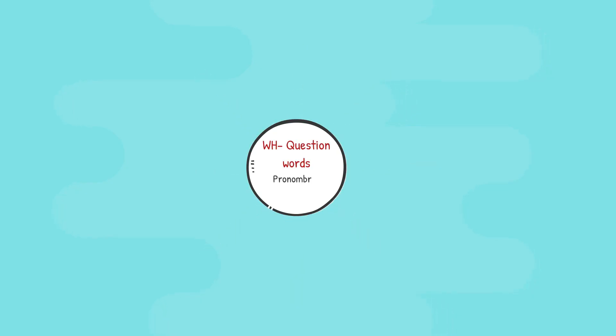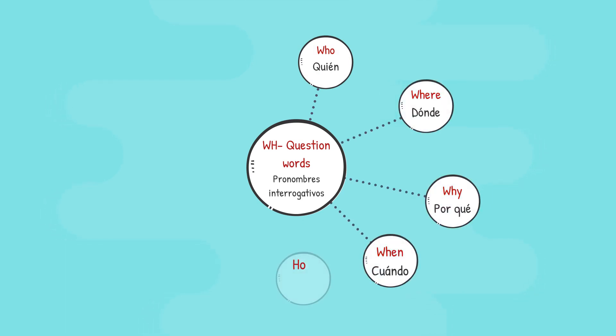WH question words: Who, where, why, when, how, what, which, whose, whom.